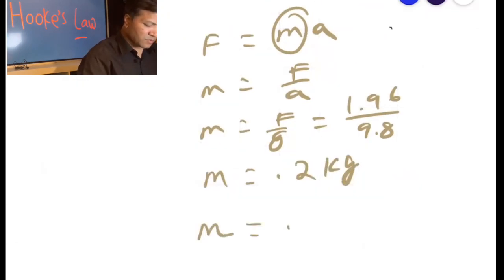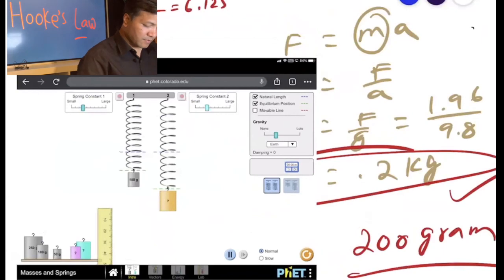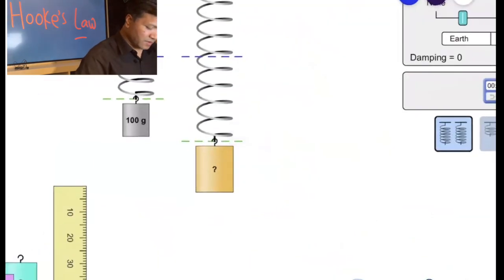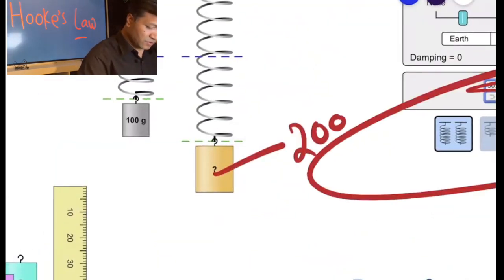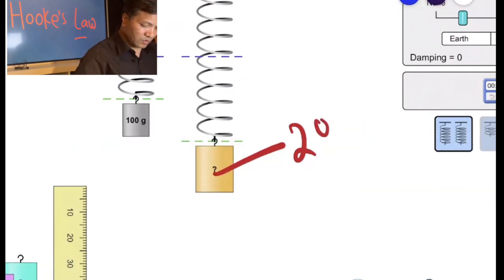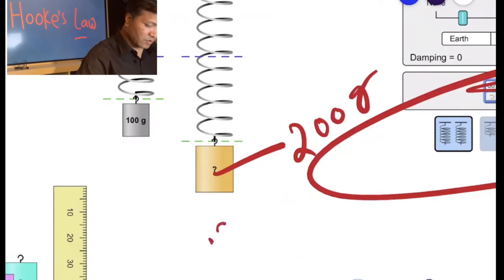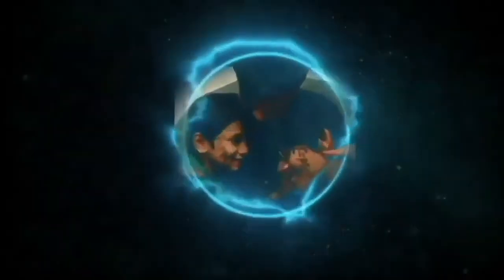If you convert it to grams, this would be 200 grams. This unknown mass would be 200 grams or 0.2 kilogram. Free science lab to fall in love with math and science, especially programming.